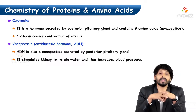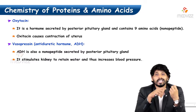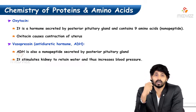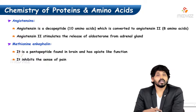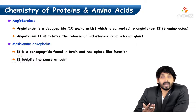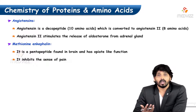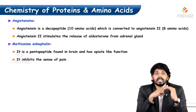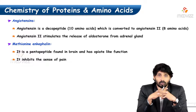Vasopressin is an antidiuretic hormone, ADH, which retains water from the glomerular nephrons of the kidney. Angiotensin is a decapeptide — made up of 10 amino acids — which is converted to angiotensin 2. Angiotensin 2 stimulates the release of aldosterone from the adrenal gland, a stress hormone.